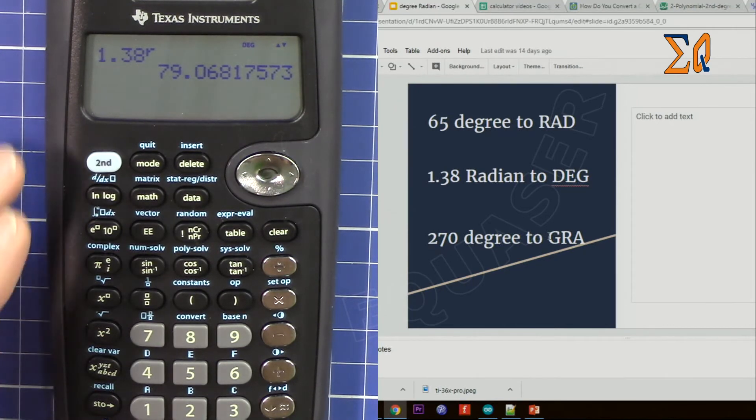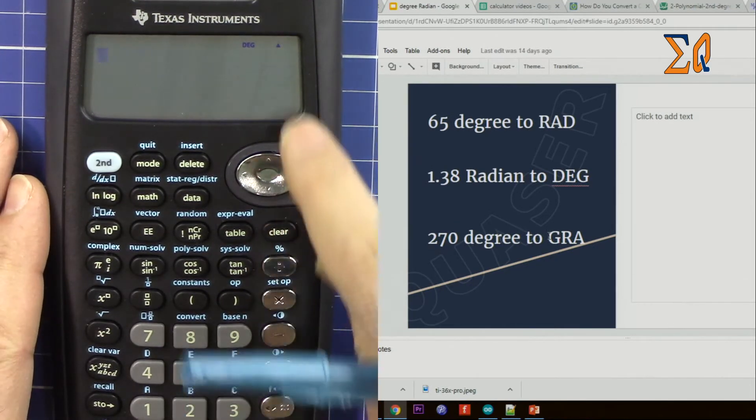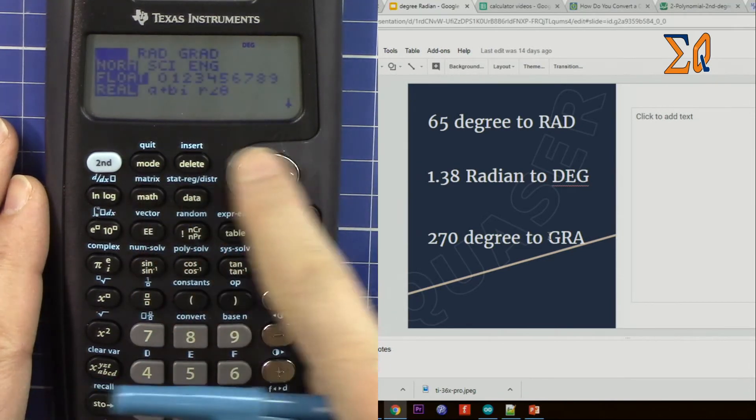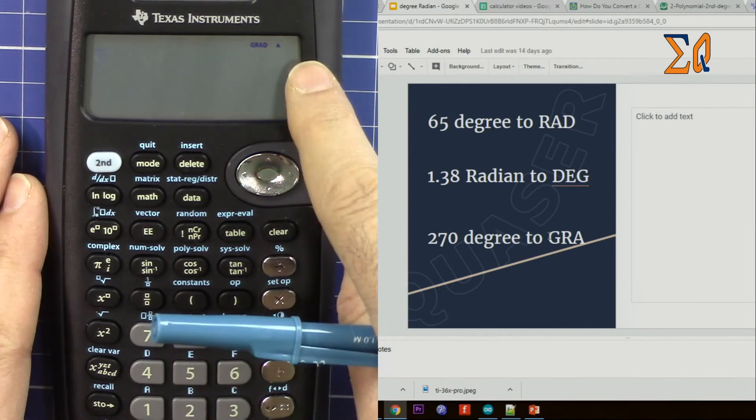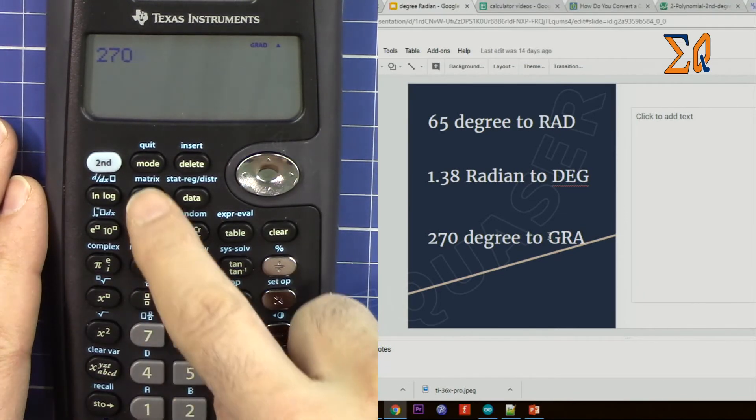Press mode and then clear. Now 270, press math, we have to say that this is in degree.